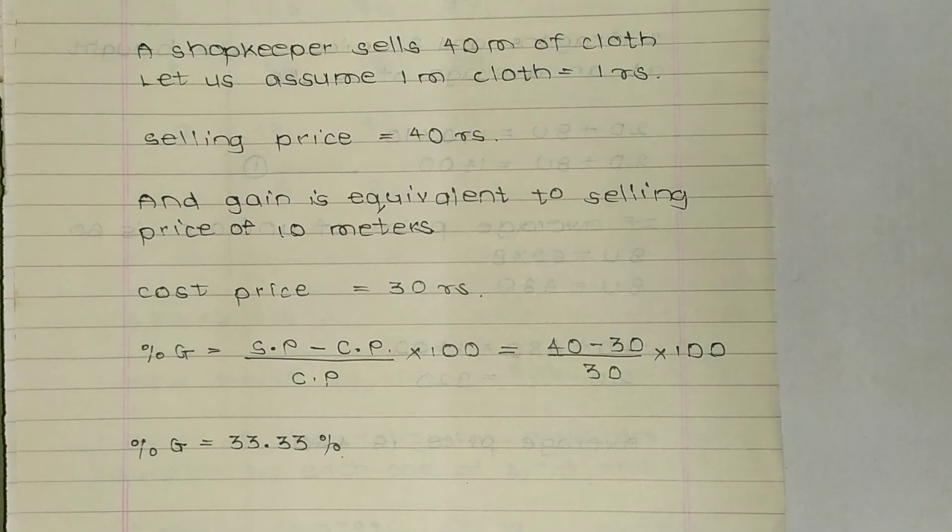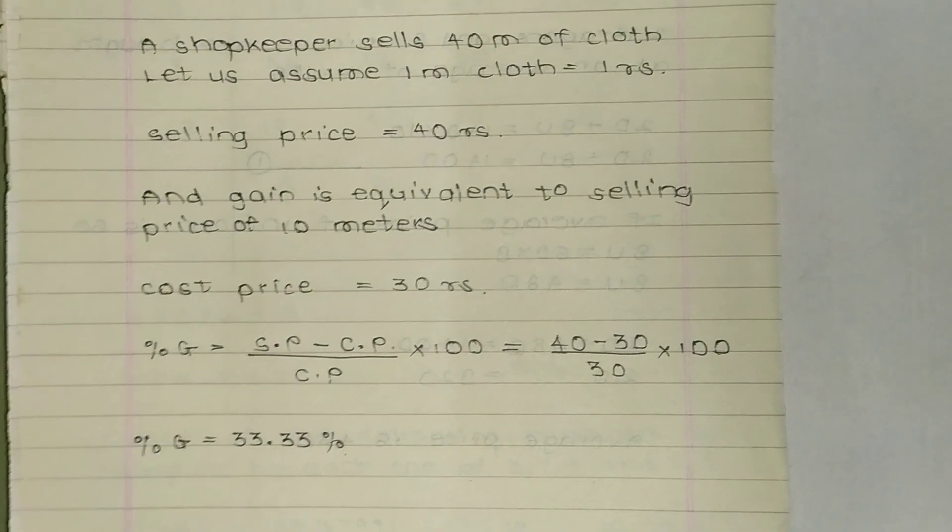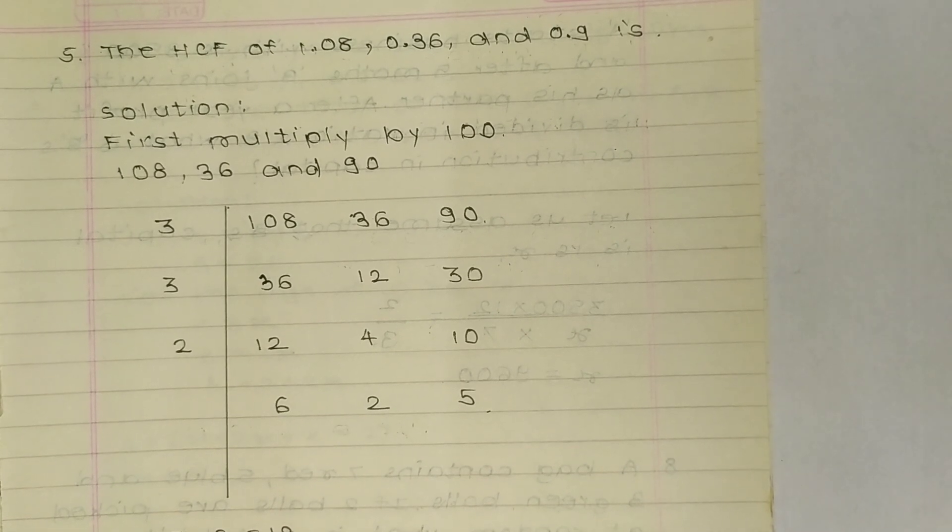So selling price was 40, cost price was 30, divided by cost price that was 30 into 100. So gain is 33.33 percent. Question 5: The HCF of...